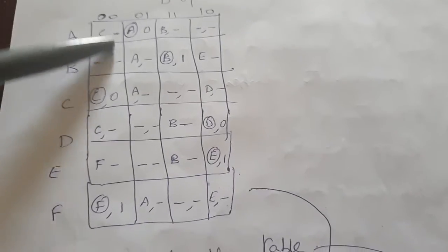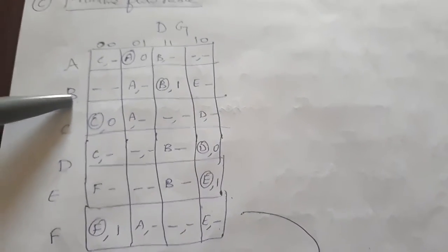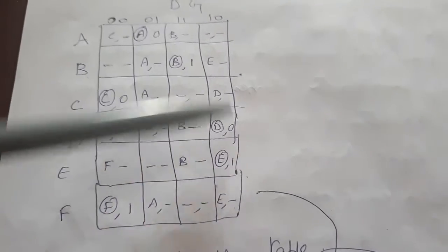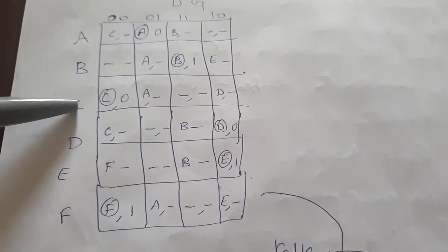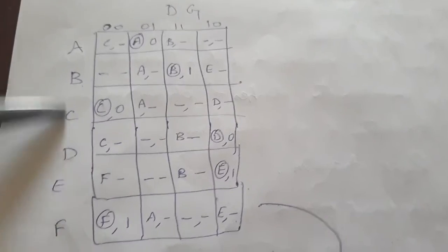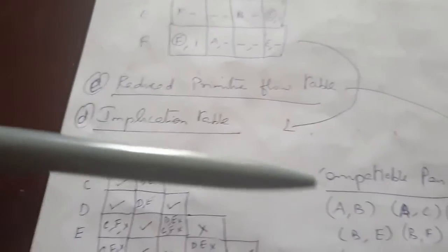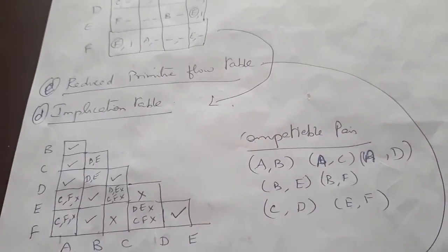Now check whether any redundant states are available by comparing values. States A and B are the same, A and C are also the same, A and D can also be compressed — therefore A,B; A,C; and A,D can all be compressed together. To reduce the flow table, we draw the implication table to find compatible pairs.